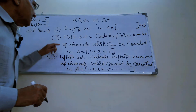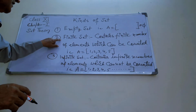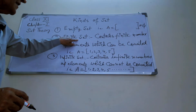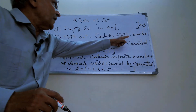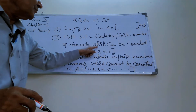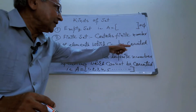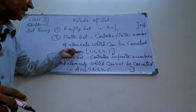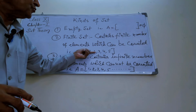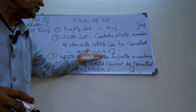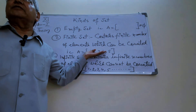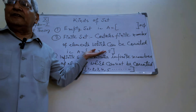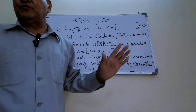So the second kind is a finite set, which contains a finite number of elements which can be counted. For example, A equals {1, 2, 3, 4, 5, 6}. There are elements in this set and we can count them.